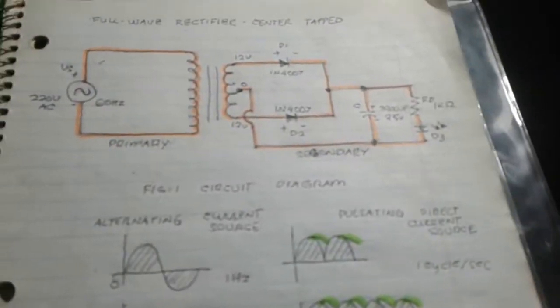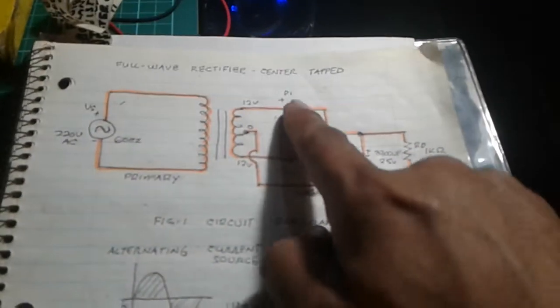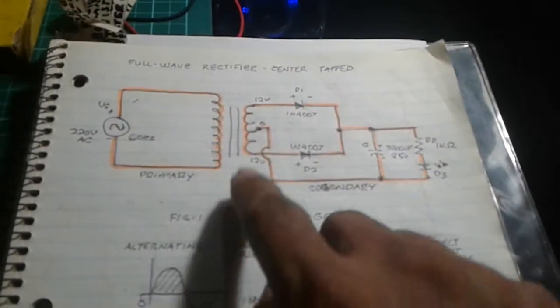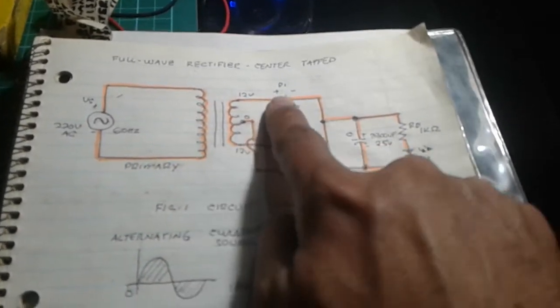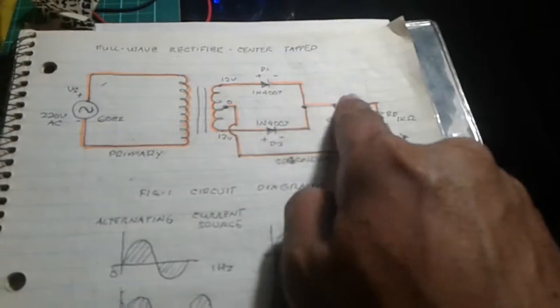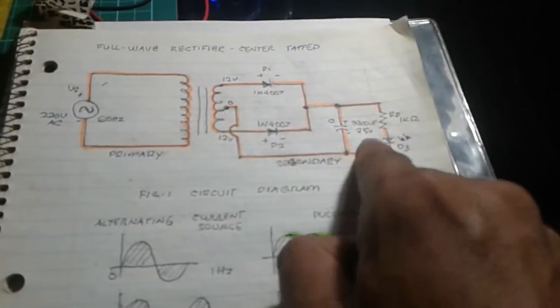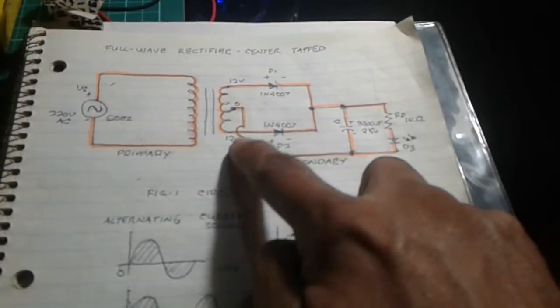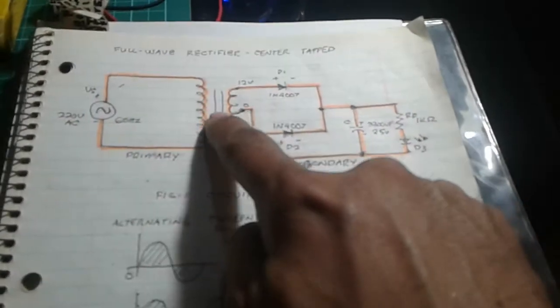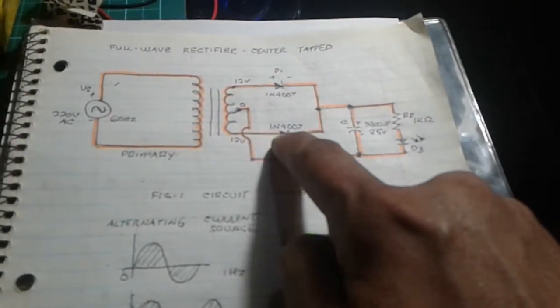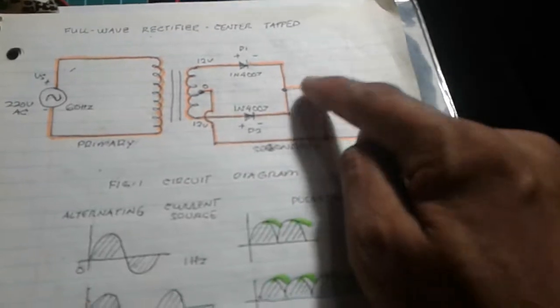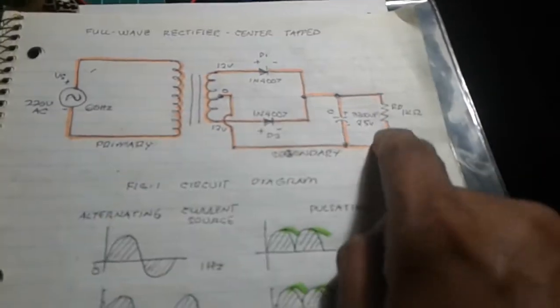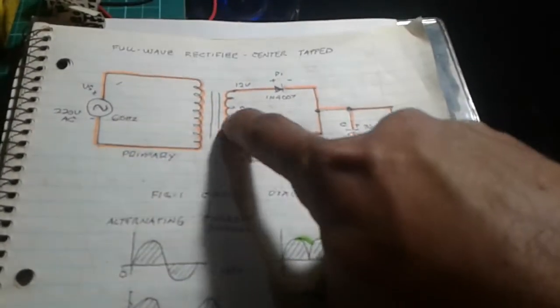Unlike the previous circuit, we now have a full wave rectifier. During the positive half cycle, current flows through the diode, to the capacitor, to the resistor, to the LED, and to the center-tap. During the negative half cycle, current flows through the other diode, to the capacitor, to the resistor, and back to the center-tap.